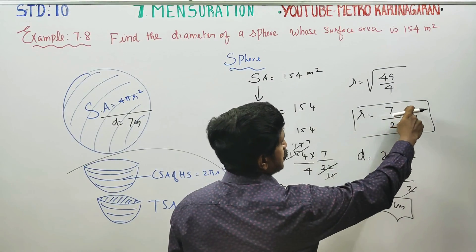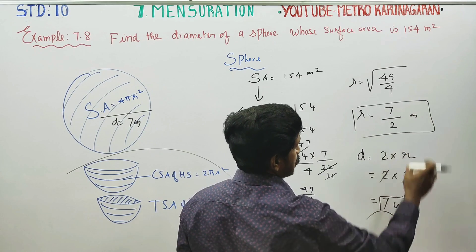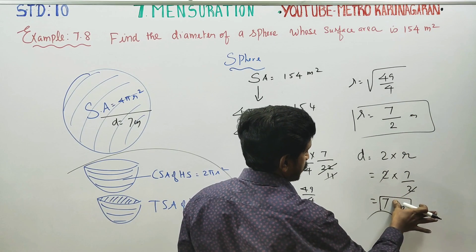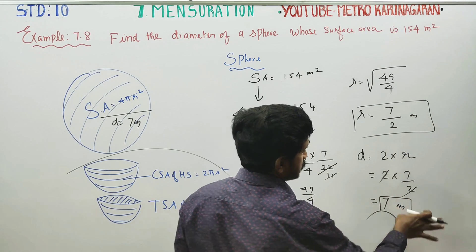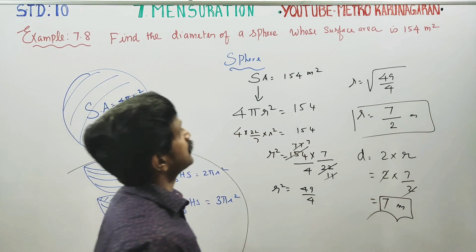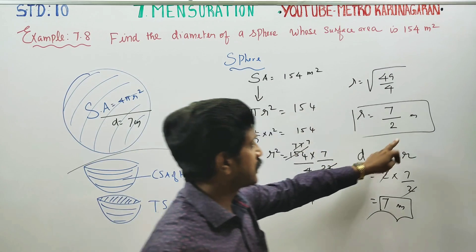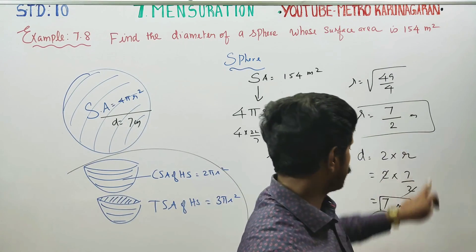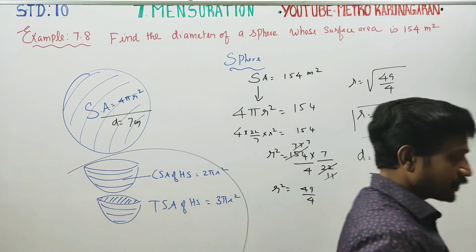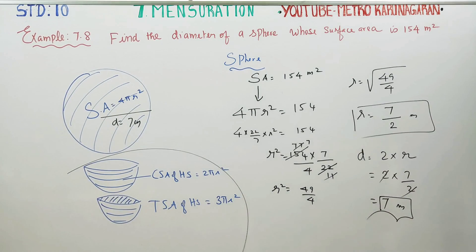Small correction — this is not centimeters; the unit is actually meters. So the radius is 7/2 meters and the diameter is 7 meters. That is your final answer.